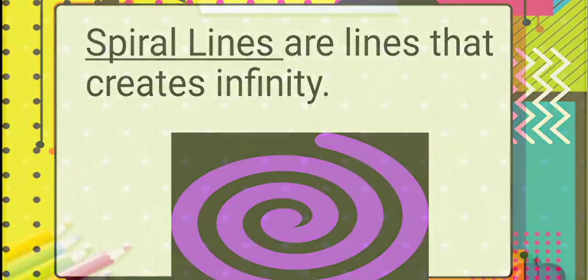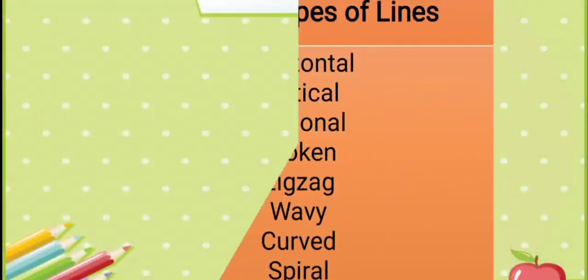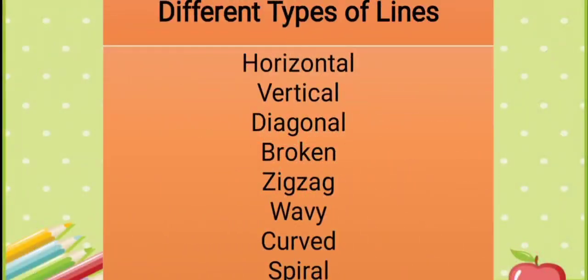Once again, we have eight types of lines, and they are: horizontal lines, vertical lines, diagonal lines, broken lines, zigzag lines, wavy lines, curved lines, and spiral lines.